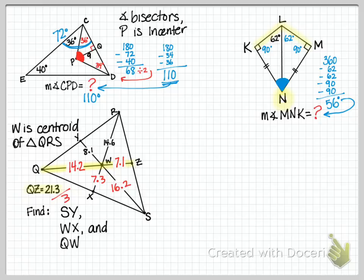Now that we have all of those pieces marked, we can answer the questions. SY is 24.3, just add the pieces together. WX, it's marked in the diagram, is 17.3. And QW is 14.2, as marked, as we marked in red in the diagram.